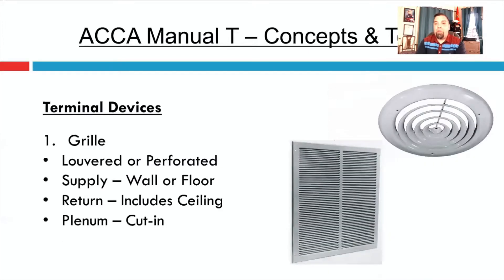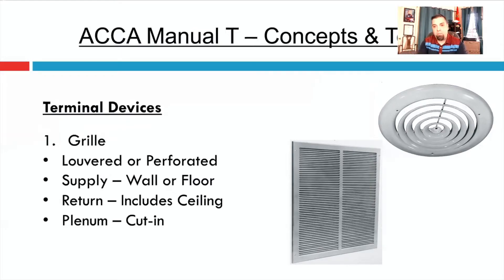We're going to get into air distribution concepts and terms today — that's the section we're covering. Some very basic stuff here. A grill is really just louvered or perforated — there's no adjustment. Typically for a supply grill you'll find it on a wall or floor. Most people don't put supply grills in ceilings, even though that's what's pictured here. On a return, you could typically see a return grill on a ceiling. There are also grills cut into supply plenums for restaurants and similar applications. Just think of it as a stamped louvered or perforated grill with no adjustment.